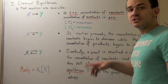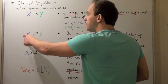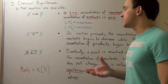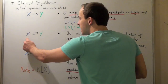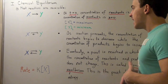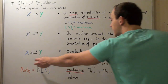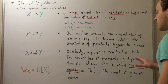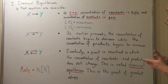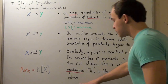As the reaction begins to proceed, the concentration of X begins to decrease while the concentration of Y begins to increase, because some of this X is converting or becoming Y. Eventually, a point is reached in which the concentration of the reactants X and the concentration of the products Y does not change. This is known as chemical equilibrium.